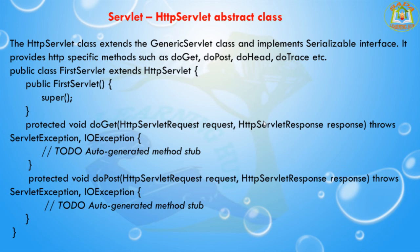The next class is the HttpServlet abstract class. The HttpServlet class extends the GenericServlet class and implements the Serializable interface. It provides HTTP-specific methods such as doGet, doPost, doHead, and doTrace methods. If you want to extend the HttpServlet class, you need to provide implementations for doGet and doPost methods — whichever methods you need to implement. These are the three important components of the Servlet API: Servlet Interface, GenericServlet abstract class, and HttpServlet abstract class.